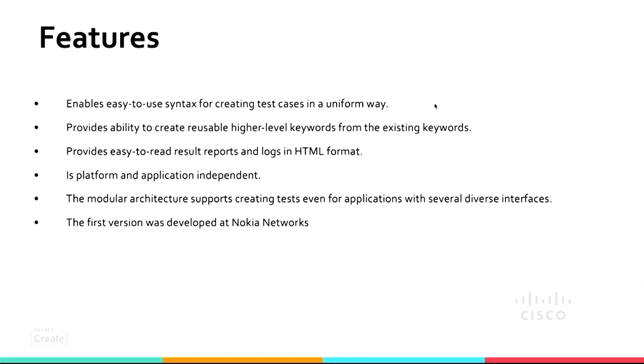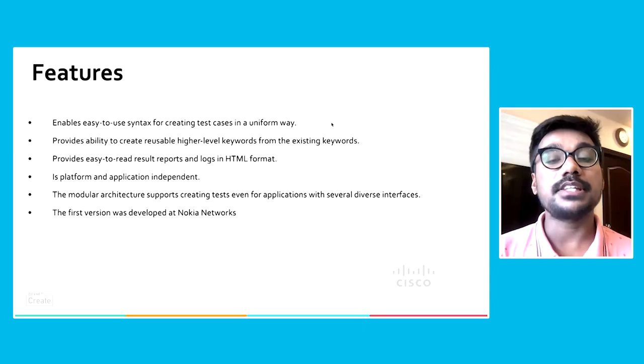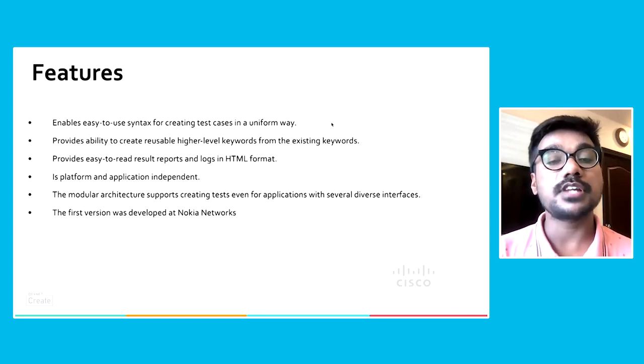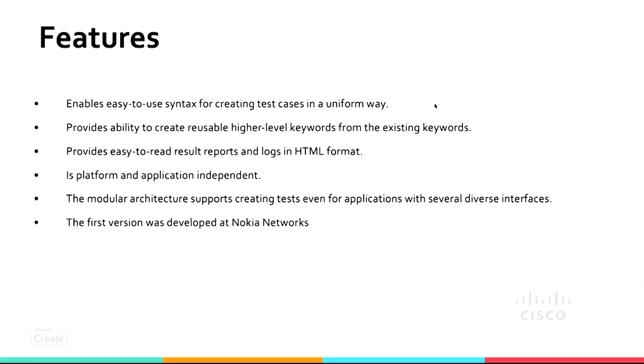The ease of usability and reusability are key features. Because when you have simple keywords, you can use them across multiple scripts, multiple customers, and multiple platforms — which brings down your development and validation time considerably. Robot Framework generates its reports and logs in HTML format, as opposed to other frameworks that use XML, which is not very readable. HTML is just so human readable, and that's definitely a plus point. The modular architecture makes it very exceptional, and this framework was originally developed at Nokia Networks.